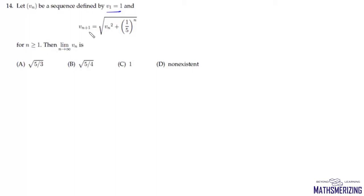We can write this expression as vₙ₊₁² minus vₙ² and it will equal 1 by 5 to the power n, which is greater than 0. From here we can write vₙ₊₁ will be greater than vₙ, meaning this sequence is monotonic increasing.